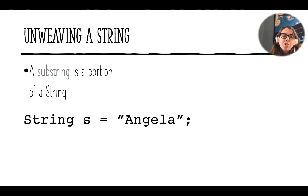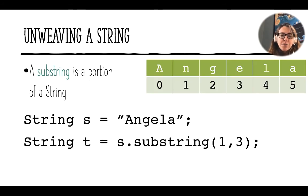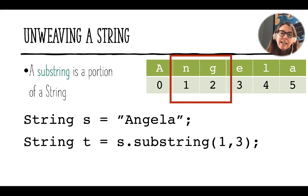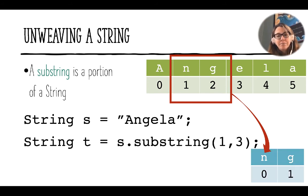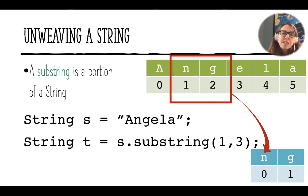A substring is a portion of a string. Starting again with s = "Angela", if we want to extract part of it we can write: String t = s.substring(1, 3). This starts at index 1 and goes up to but not including index 3, so the result held in t is the string 'ng'. It might seem confusing that the indices in t start at zero — that's because it's a new string with its own new indices, not retaining the indices from the original string.